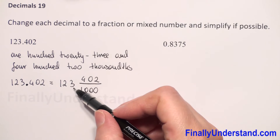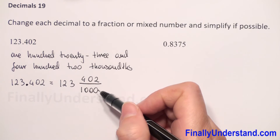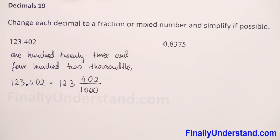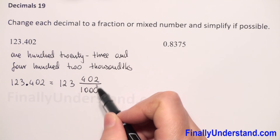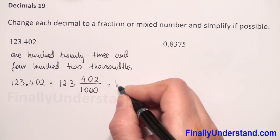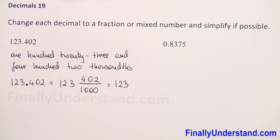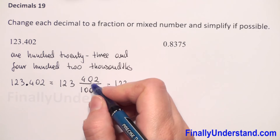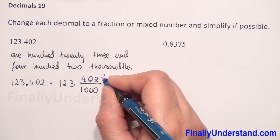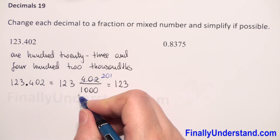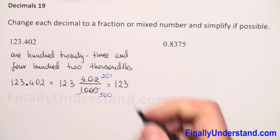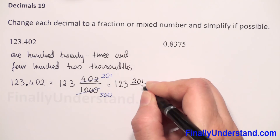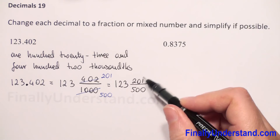So we have 123 and 402 thousandths — written as 123 and 402 over 1000. Next we check if we can reduce. We have even numbers at the end, so we can reduce by two: 402 divided by 2 is 201, and 1000 divided by 2 is 500. So we have 201 over 500 in the numerator and denominator — we cannot reduce this fraction further.